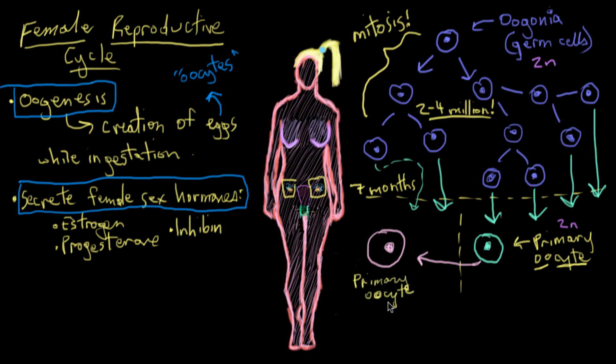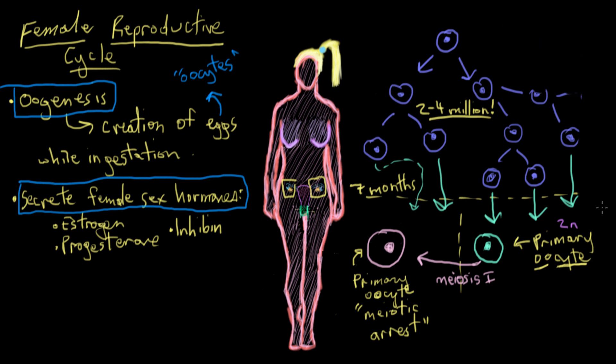So they're stuck as these big cells. So they're still primary oocytes, but they're said to be in meiotic arrest. So when the female who's been developing in her mom's womb, when she's born, her primary oocytes are in meiotic arrest. So the question is, do they stay like this? And the answer is, some do and some don't.